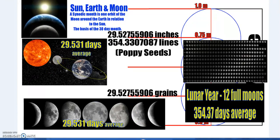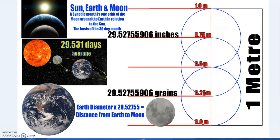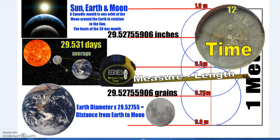Twelve synodic months creates a lunar year: 354.37 days on average — 354.33 lines or poppy seeds. Grains is a way to break down an inch, and then we can break down grains into what are called lines or poppy seeds. So we have these measurements built into the measures here. One meter from that double Vesica Piscis — I'll put the links in the descriptions to the other videos — shows the synodic month measurement of length also encoding measurement of time.